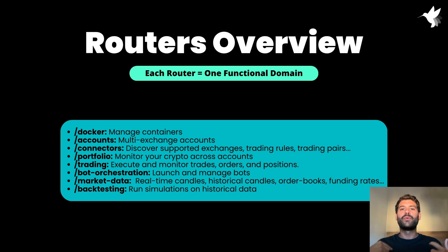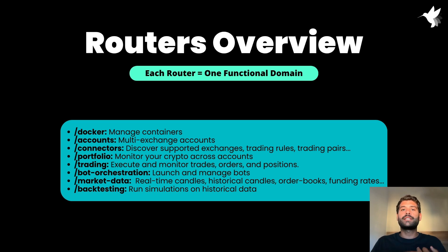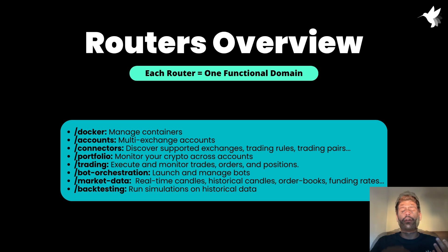We have the connector router that tells you what connectors are available and the trading rules for a specific connector. This is really nice because you can see what trading pairs are available, the minimum order amounts in quote or base assets, the minimum price increment — all important things when building configurations for your strategies. You can also see more general information like what supported order types a connector has, for example limit and market orders, or limit maker.